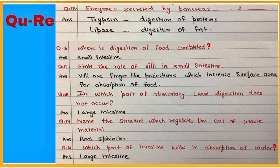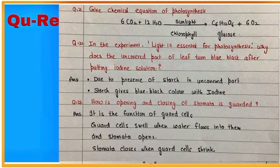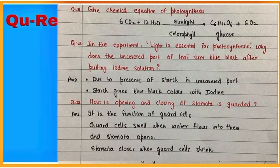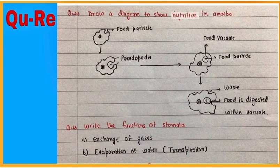These are question numbers 15 to 20. They will help you to learn important points of the topic. Learn the chemical equation for photosynthesis. It is better to explain nutrition in amoeba through a labeled diagram.